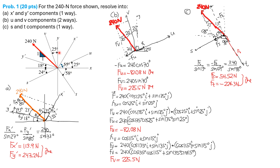For the unit vector of the V axis, 90 plus 25 is 115 degrees, so the unit vector of axis V is cosine 115° i + sine 115° j. Obtaining the dot product, FV equals 240 times (cosine 135° × cosine 115° + sine 135° × sine 115°), which equals 225.5 Newtons.